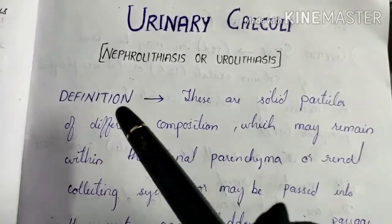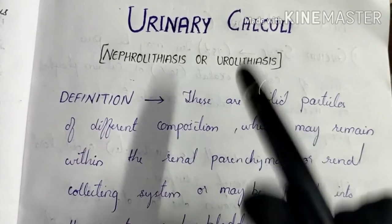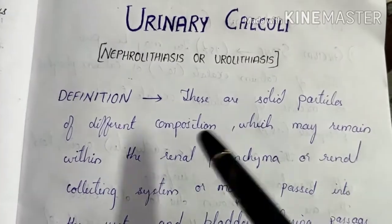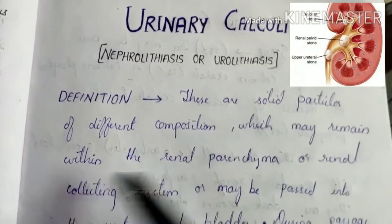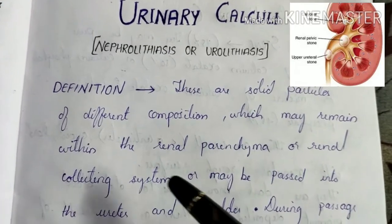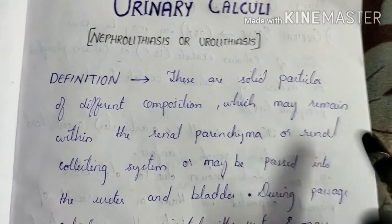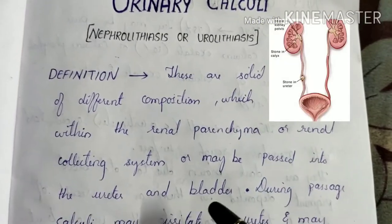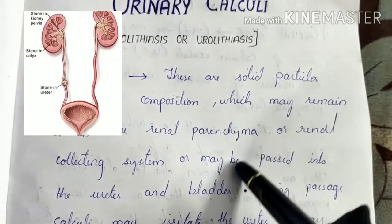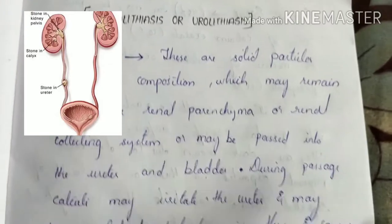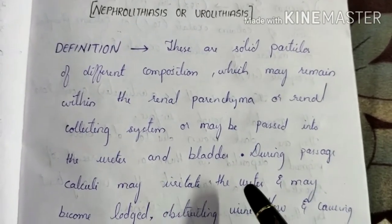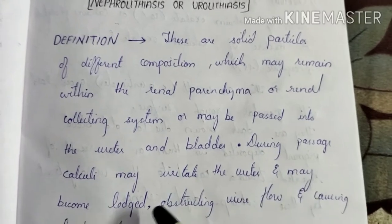Moving on to the proper definition, urinary calculi are solid particles of different composition which may remain within the renal parenchyma or in the renal collecting system, or may be passed down into the ureter and the bladder. First the stone is formed in the kidney; it may slip through the ureter and come to the bladder as well. During this passage, the calculi may irritate the ureter and may become lodged.